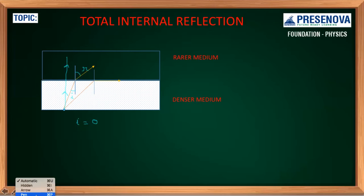Now one point will come at a particular angle of incidence that your angle of refraction will become 90 degrees. This particular angle of incidence for which your angle of refraction is 90 degrees is known as critical angle.